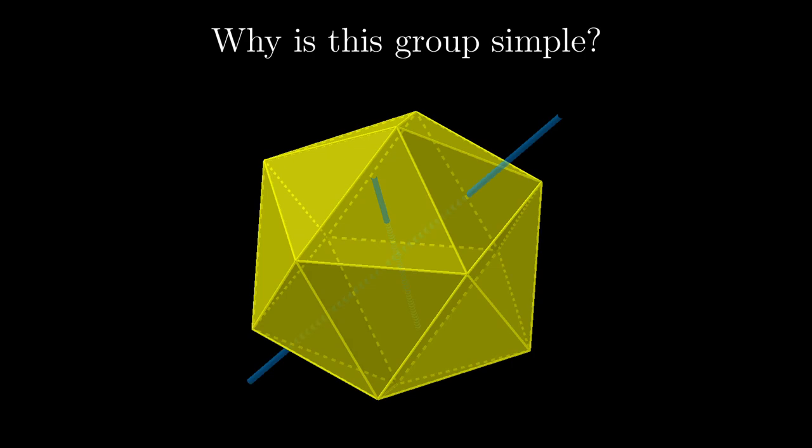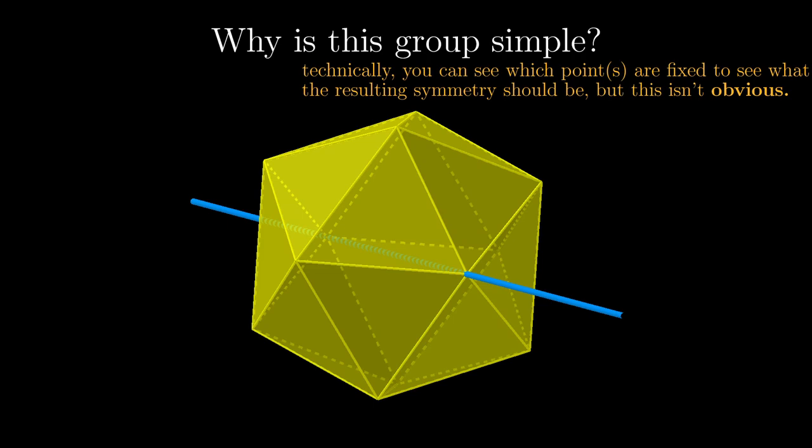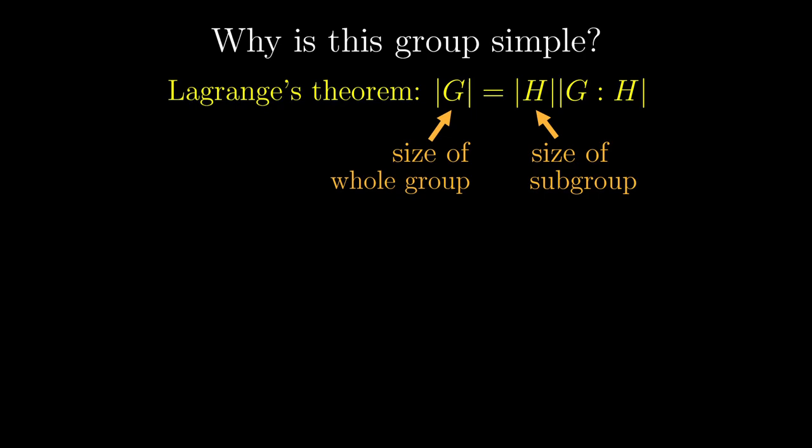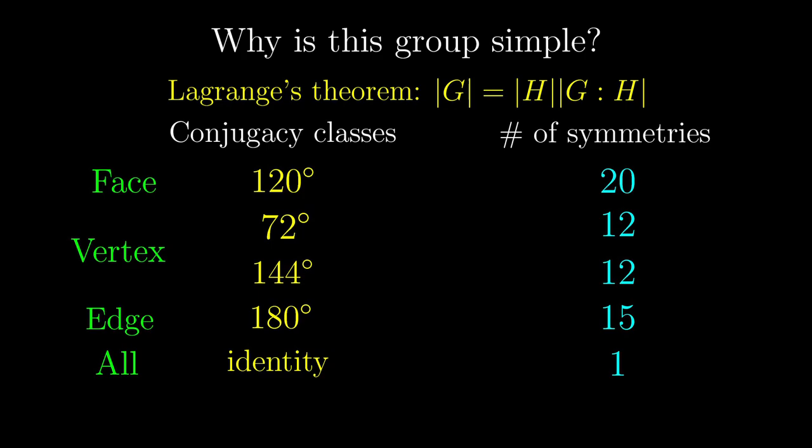However, it is not immediately obvious that doing this 120 degree counterclockwise rotation, then another one with a different axis is actually this 144 degree clockwise rotation, unless you are very familiar with 3D rotations. So instead, let's recall something we know about subgroups, Lagrange's theorem, which looks something like this. But all we need to know is that the size of any subgroup has to be a factor of the size of the entire group.